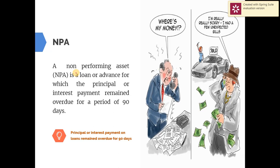The definition of NPA: a non-performing asset is a loan or advance which a bank gives to corporates or individuals. If any corporate or individual fails to repay loans or interest for over 90 days, then these loans will become NPA.